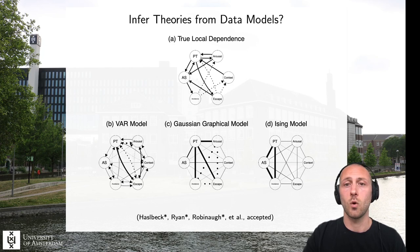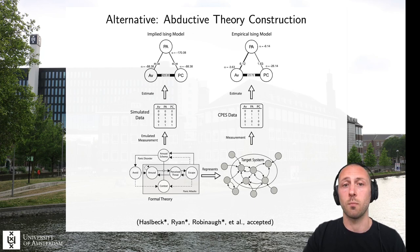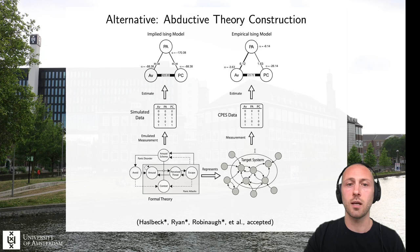To tackle this issue of how to use data models to construct theories, we suggest an adaptive approach to theory construction that makes use of the fact that we can always determine which data model is implied by a given theory. The idea is that we start out with some initial formal theory — and importantly, this theory can be quite poor at the beginning. We then use the theory to simulate data and estimate a data model from those synthetic data that captures some characteristic of interest. On the empirical side, we mirror this process by collecting corresponding empirical data and fitting the same data model. We then compare the empirical data model with the theory-implied data model, look at discrepancies, which can be used to tweak the current version of the theory, and repeat this cycle.